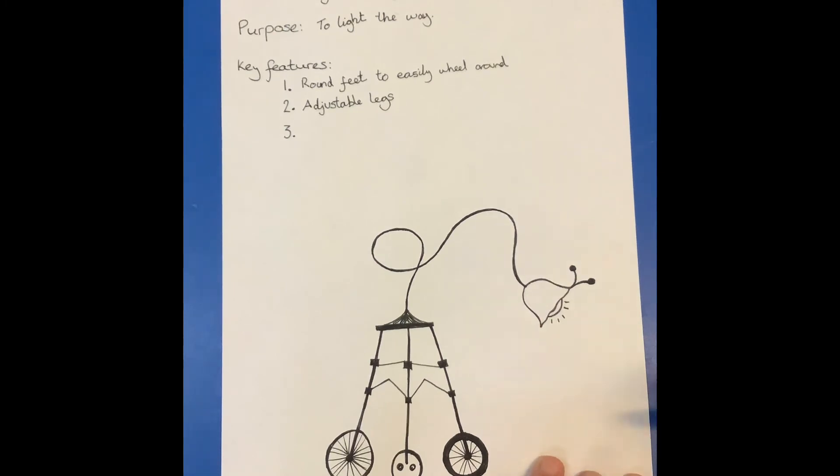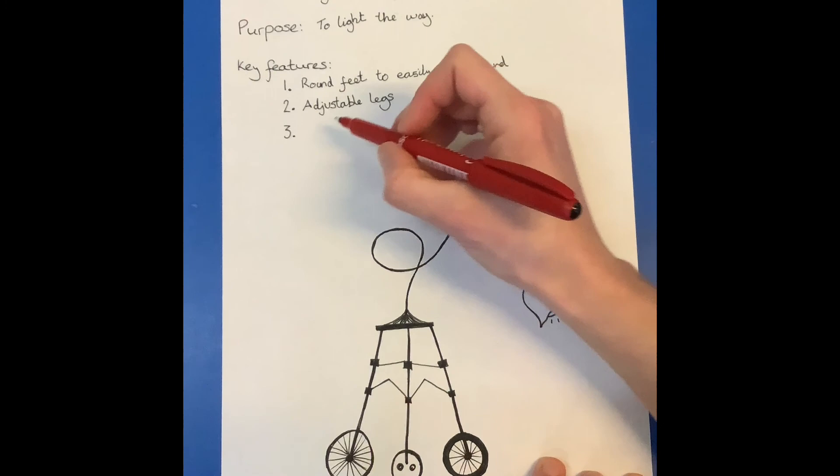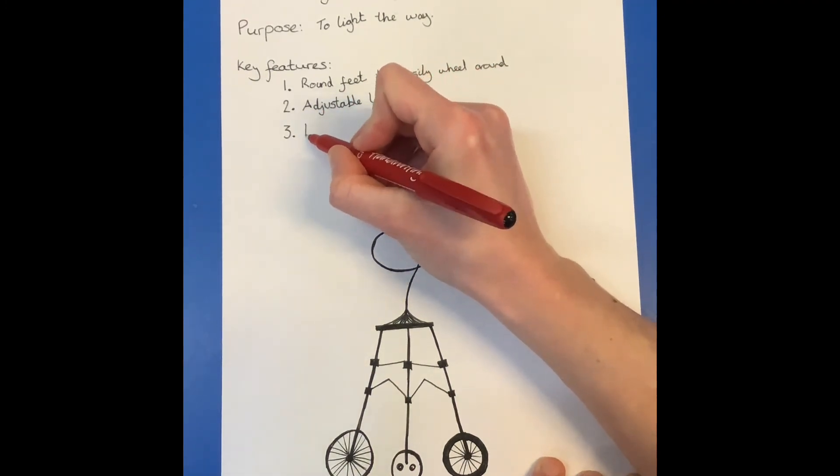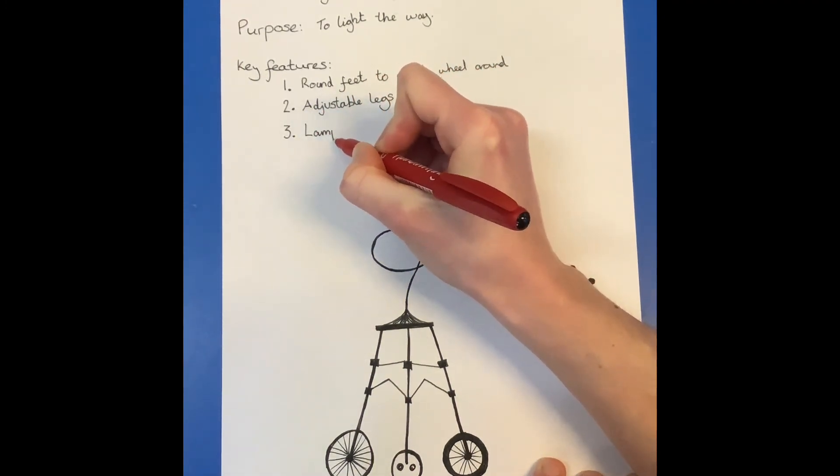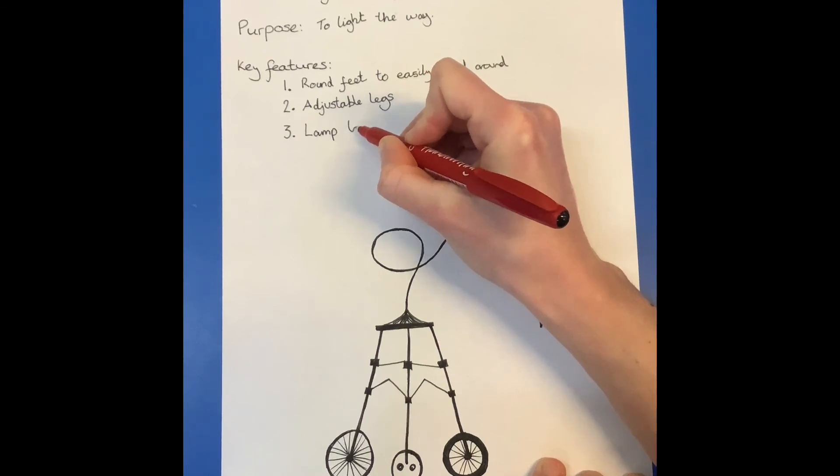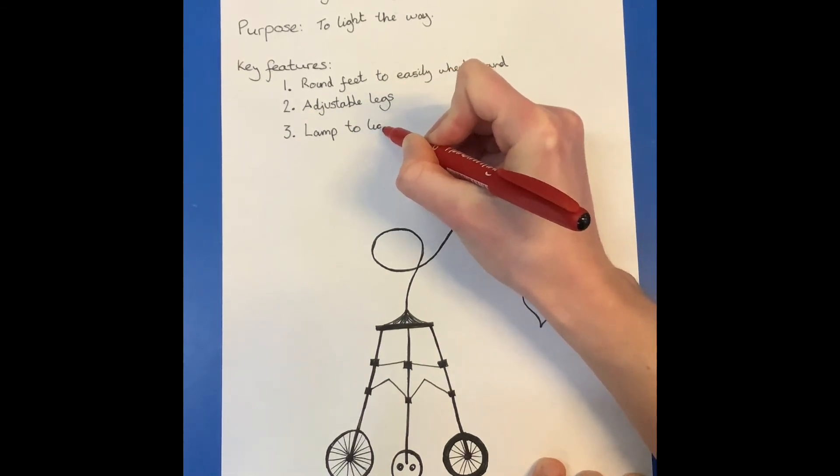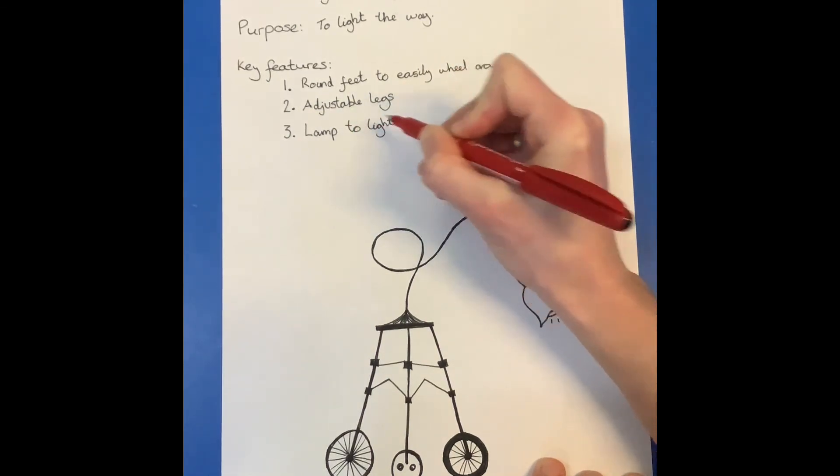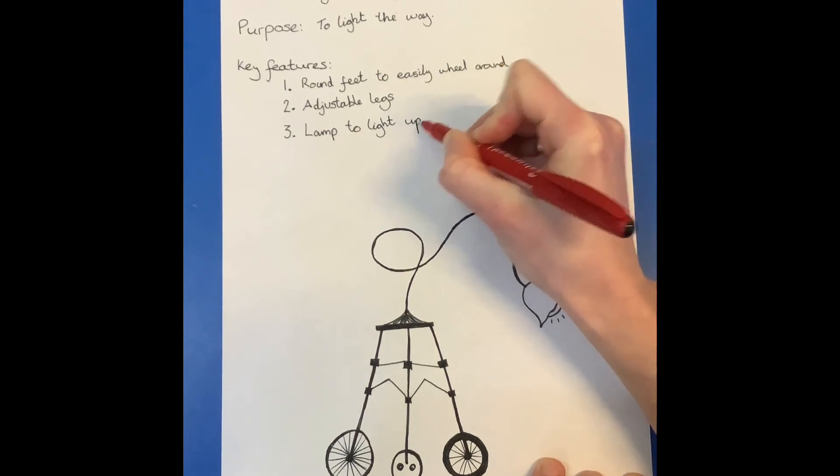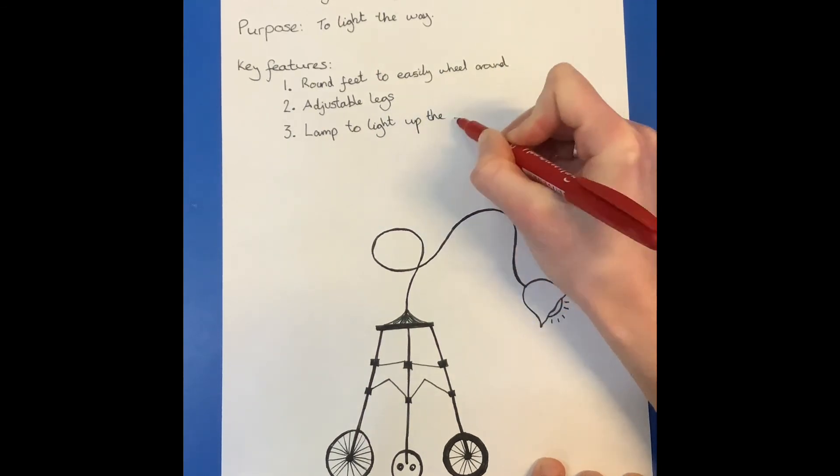And my last key feature has got to be the lamp, I think. And he's got these funny feelers. I thought that would be important for him to be able to feel out whatever he's trying to light up. So a lamp to light up the dark.